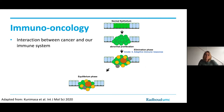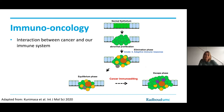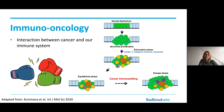But over time, the tumor cells find ways to escape the immune system. They outgrow and finally develop metastasis, which can ultimately lead to patients dying from cancer. So actually, during this whole phase of tumors developing and growing, there is a constant battle ongoing between the tumor cells and the immune cells infiltrating the tumor.